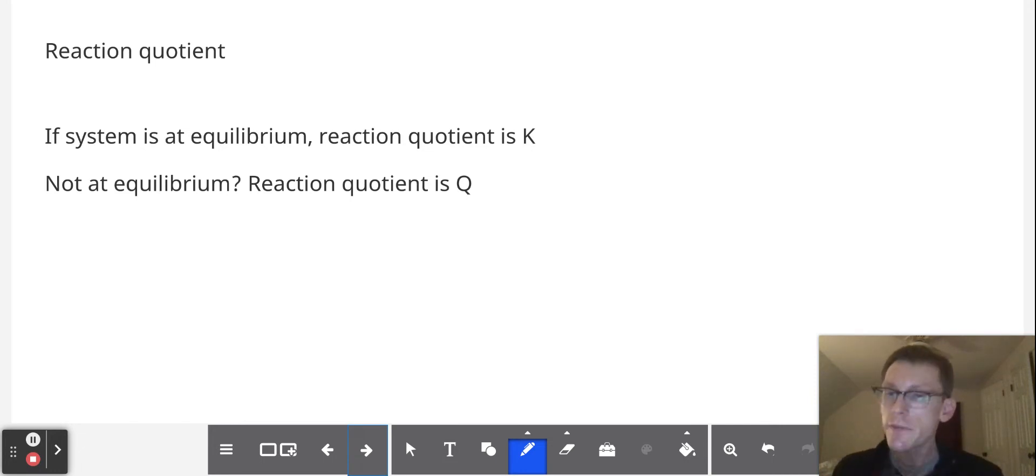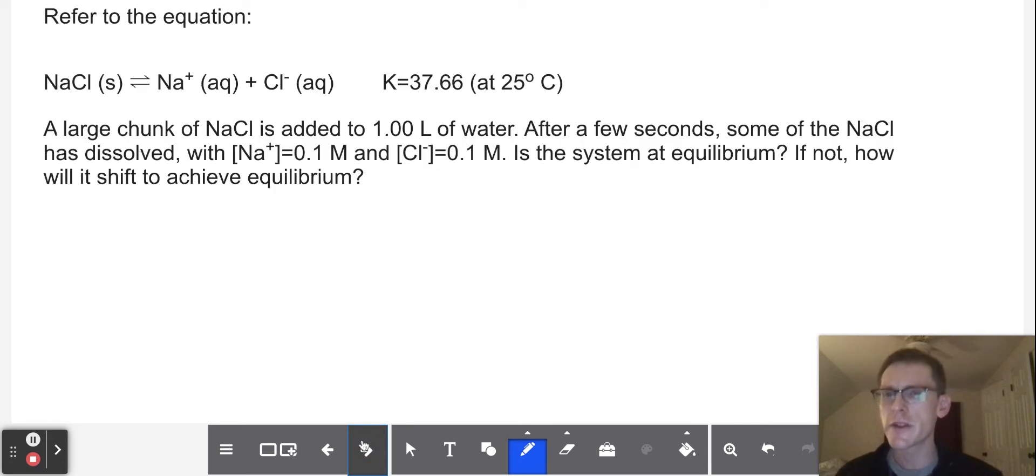Well, that's equal to K if the system is at equilibrium. But if the system is not at equilibrium, then we should just say that the reaction quotient is not equal to K, it's equal to Q. A little bit weird, but let's put this into practice.